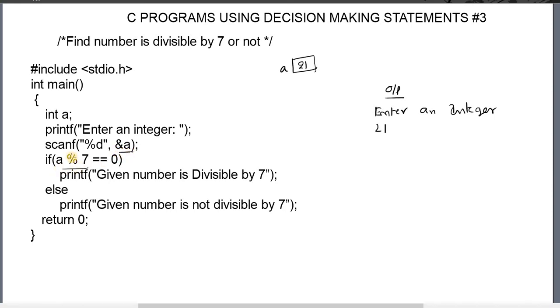The modulo division operator will give the remainder. Here a is 21, so 21 by 7 gives result 0.